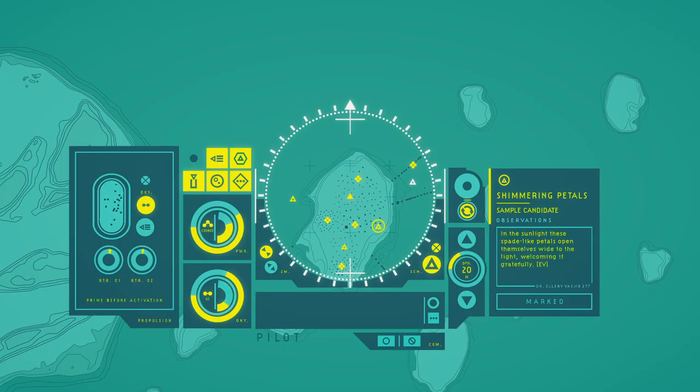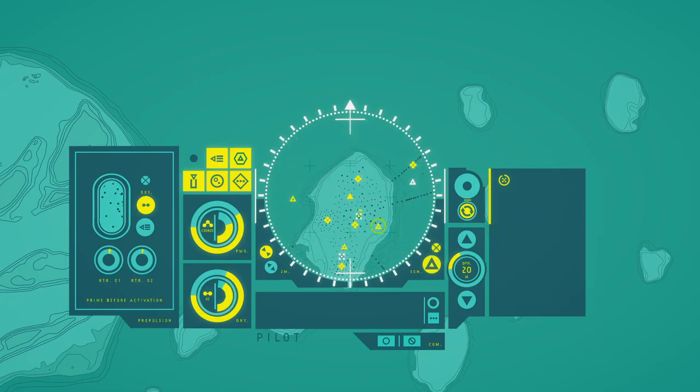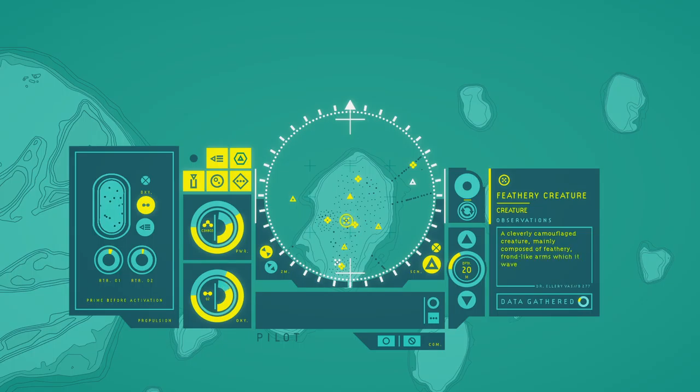In the sunlight, these pale light bulbs open themselves, white, black, broken and weightfully. A cleverly camouflaged creature, mainly composed of feathery, thorn-like arms which it waves delicately as it moves. These funny feathery creatures are all around these gardens. Let's start observing their movements.